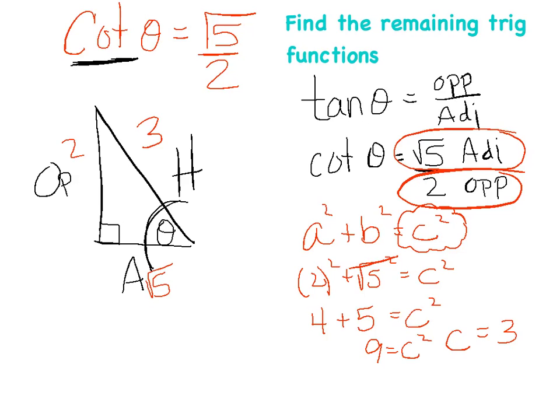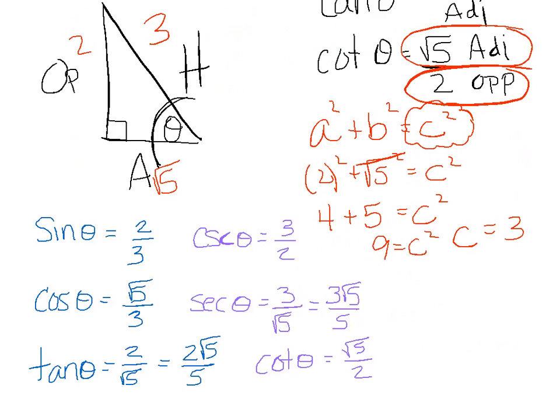Pause and try listing all six trig functions on your own: sine, cosine, tangent, cosecant, secant, and cotangent. Then check back. The results use opposite/hypotenuse, adjacent/hypotenuse, and opposite/adjacent — then flip those for the reciprocals. Rationalize the denominator where a radical appears.